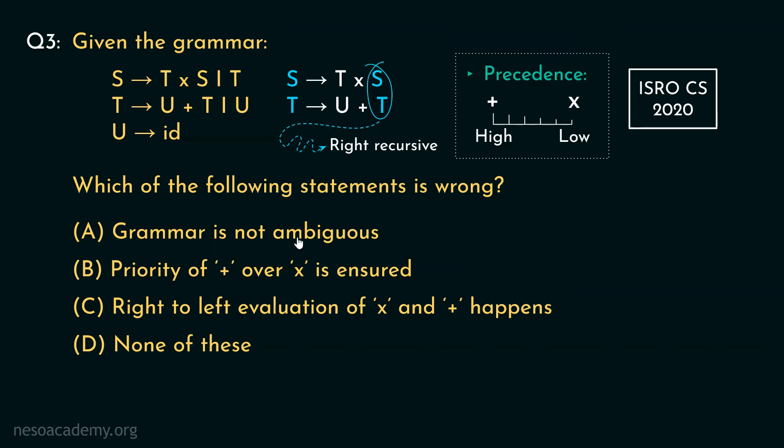So the grammar is not ambiguous is correct. Priority of plus over into is ensured. It is also correct. Right to left evaluation of into and plus happens while the production containing the operators both are right recursive. So none of these following statements are wrong. Let's now move on to the final question.